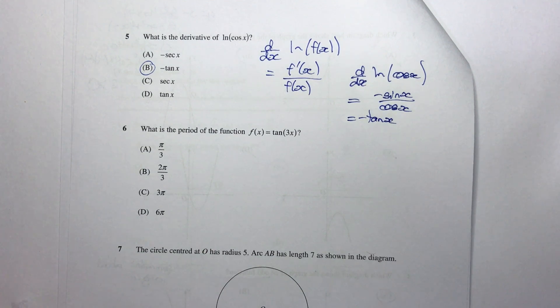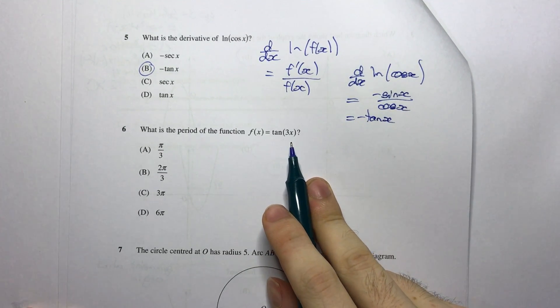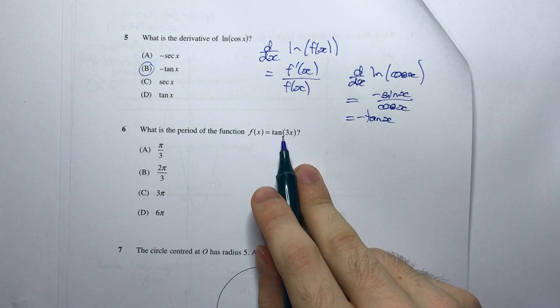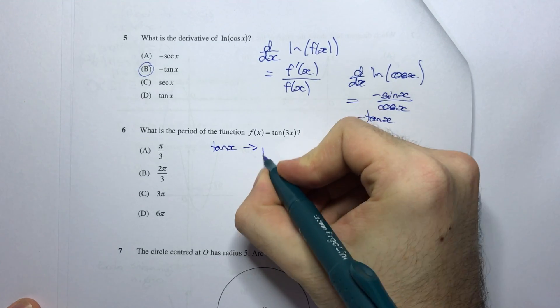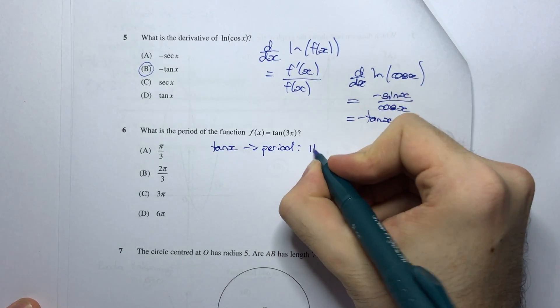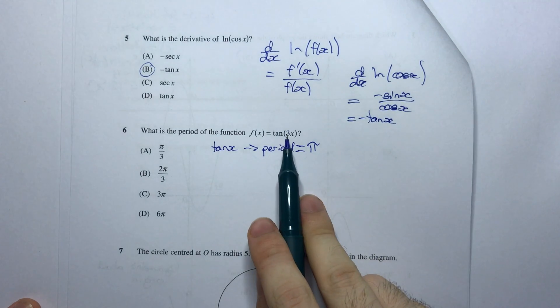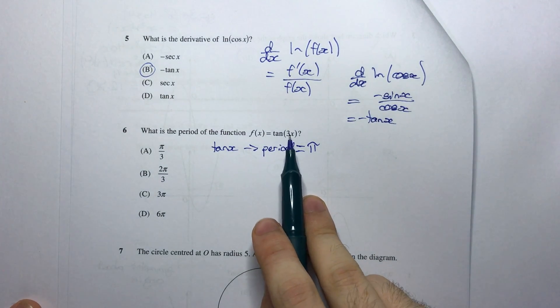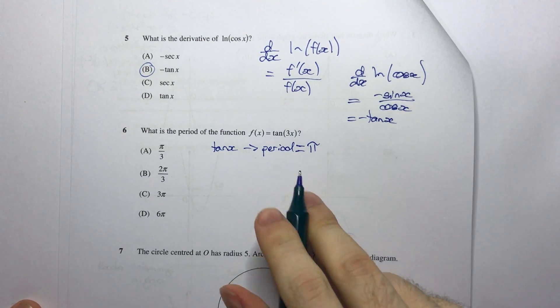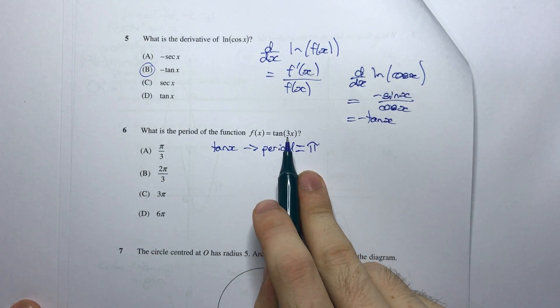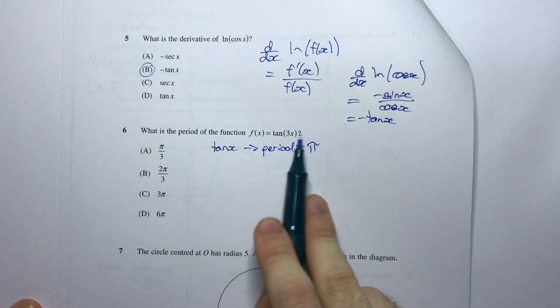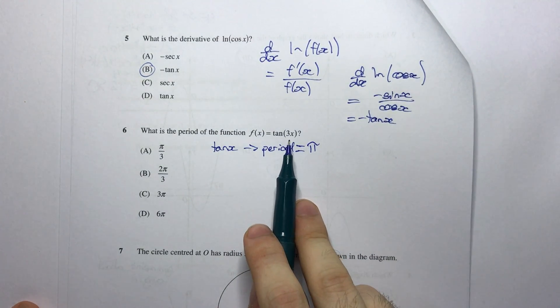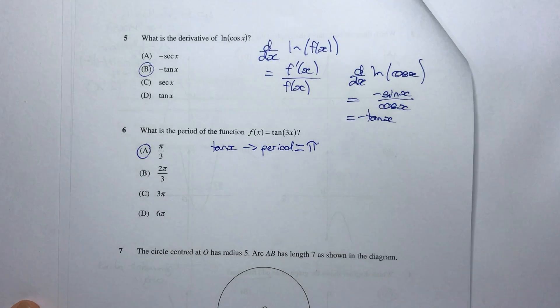The next one: What is the period of the function f of x equals tan 3x? Now if I just consider tan x, the period of tan x has a period of pi. Now what does having a 3x here mean? That means that I'm going to fit three tan functions inside my period. Or in other words this is the frequency. So the tan occurs three times within this period. So if I want the period of this thing here that means I would have to divide my original period by three. So the answer is going to be A, pi divided by three.